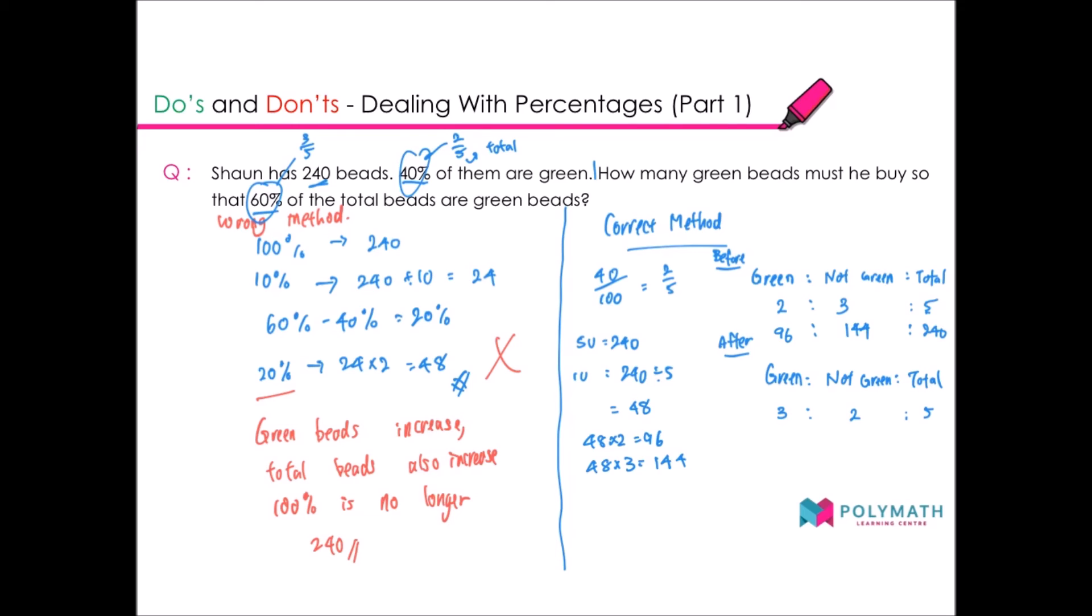Here comes the key in answering this question: you must realize this is a before and after concept, where the one that is not green is unchanged. You are going to buy some green beads, but you are not going to touch the non-green beads. The non-green beads are going to remain the same. So then you will know that this 144 is going to stay as 144 even after you have bought some green beads.